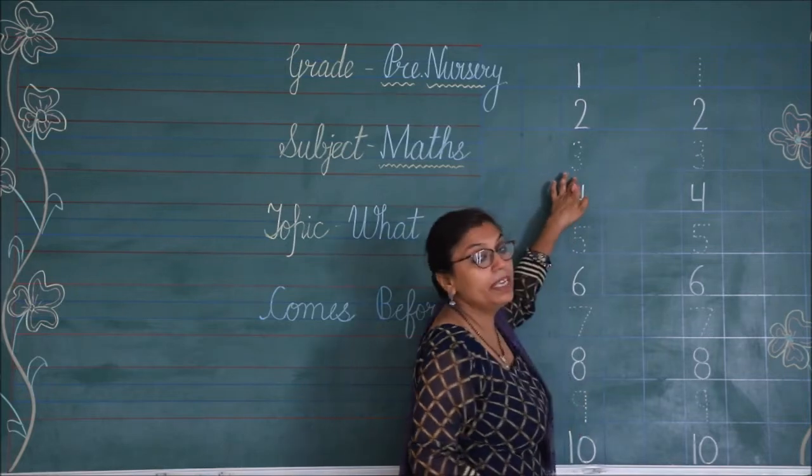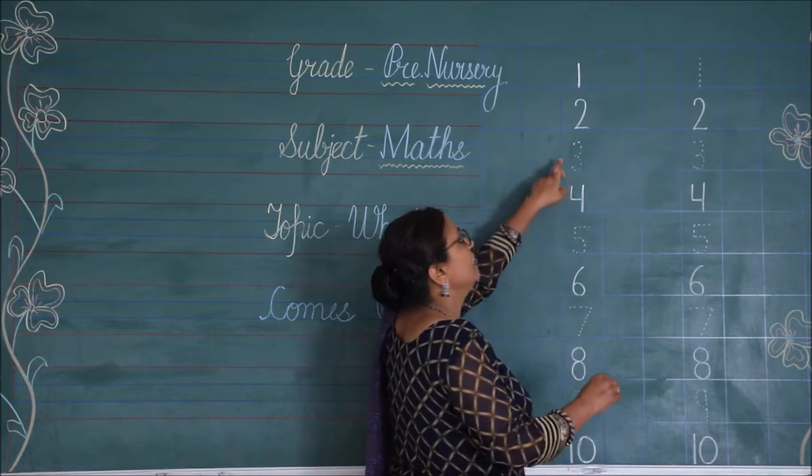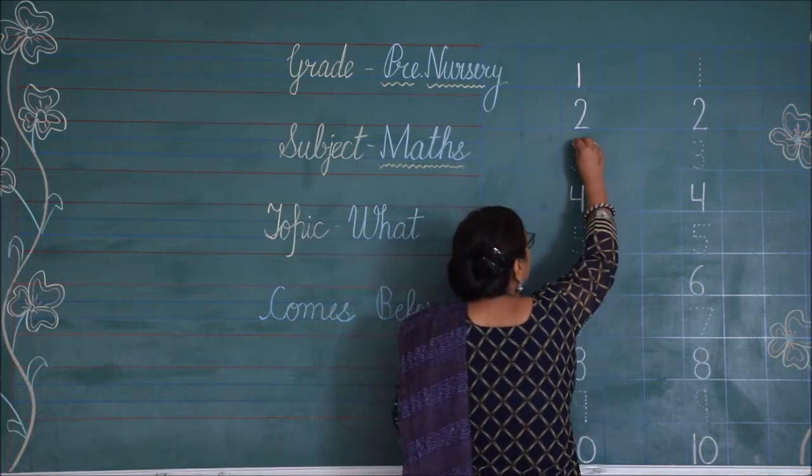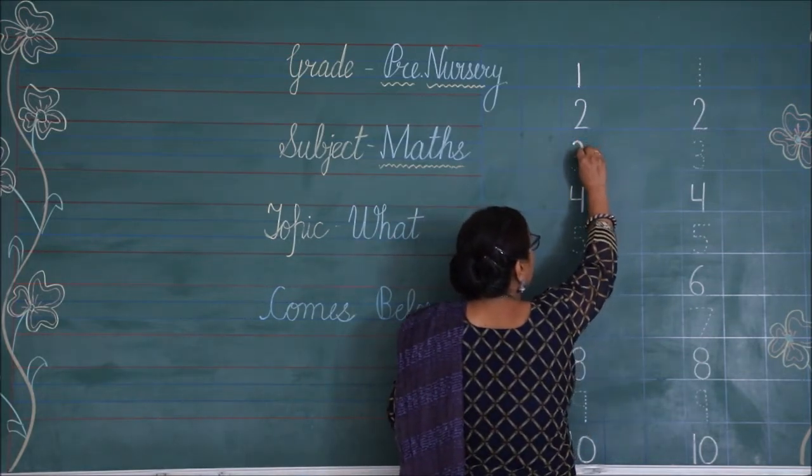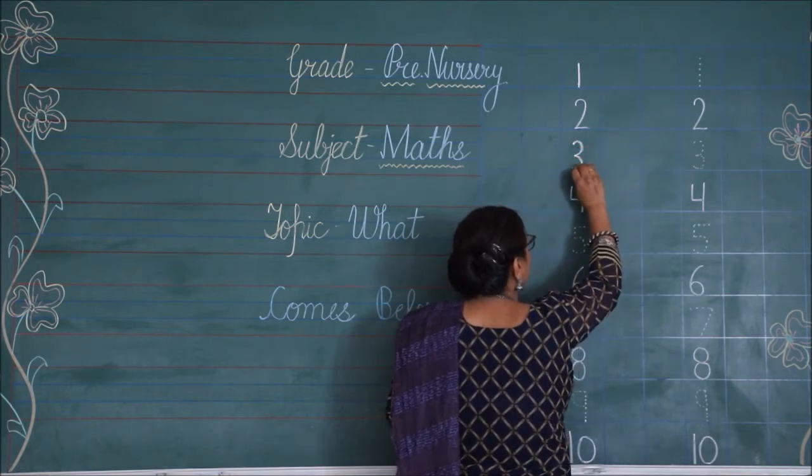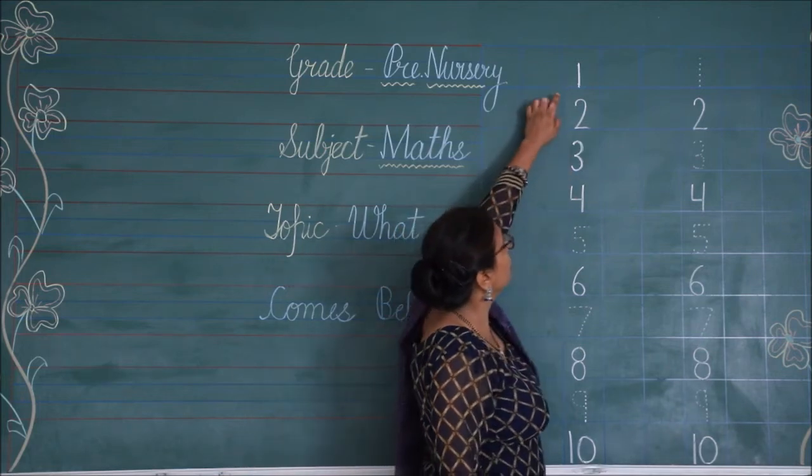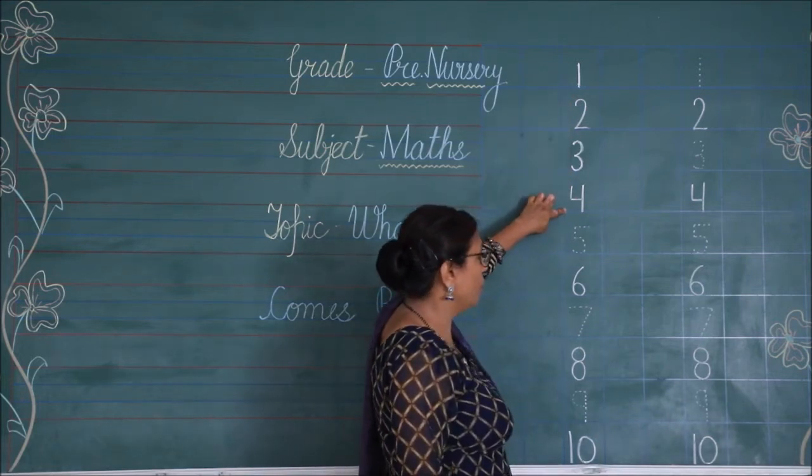Which number is missing? And the next number is 4. Which number comes before 4? Yes. The number 3 will come before 4. So, you have to join the dots of number 3. And write it beautifully. Now, we have written the counting. 1, 2, 3, 4.